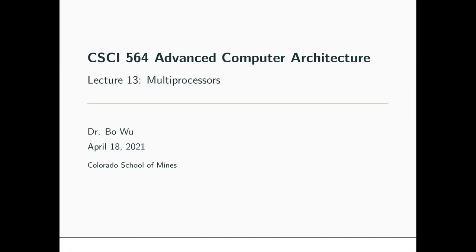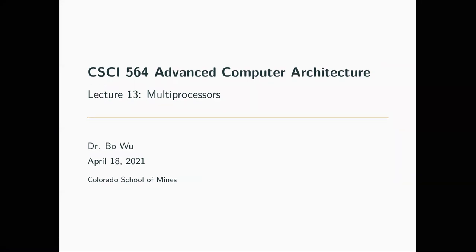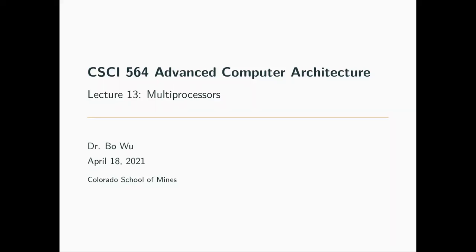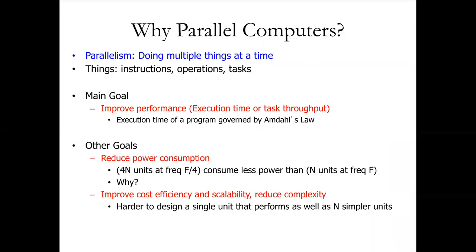Now we're going to switch gears to another type of parallelism. We've seen pipelining at the different execution stages — load, register read, execute, memory, writeback — that's instruction level parallelism. We just finished SIMD which is data level parallelism operating on different data elements. Now we're going to talk about multiprocessors, which gives us a new kind of parallelism: task parallelism.